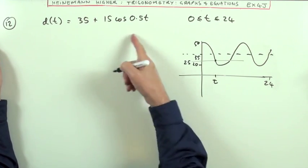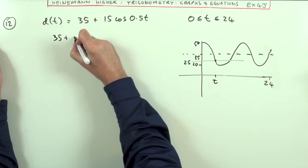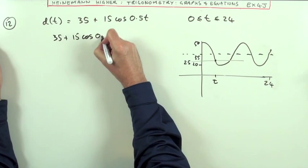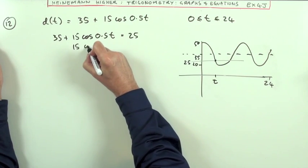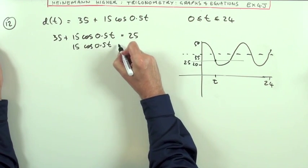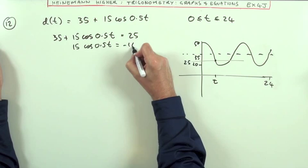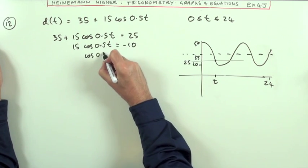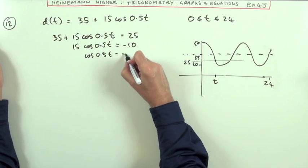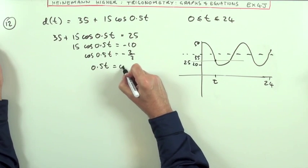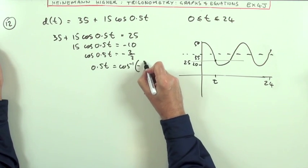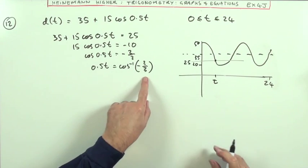Doing it all in radians. That means I've got 35 plus 15 cos 0.5t has to equal 25. So 15 cos 0.5t, take the 35 away, it will be negative 10. So cos 0.5t divided by the two, so that's negative two thirds. So 0.5t is going to be inverse cos of negative two thirds in radians though.